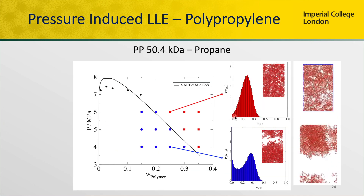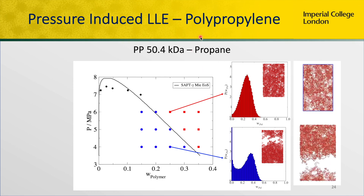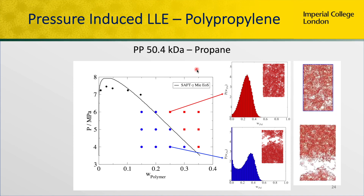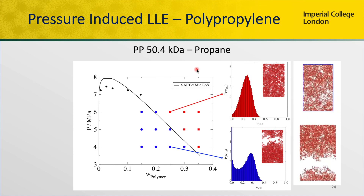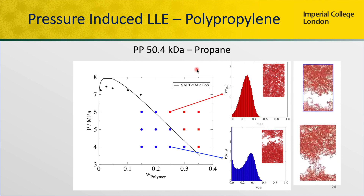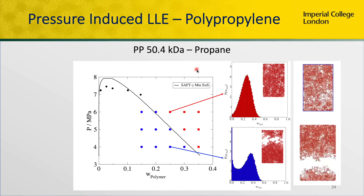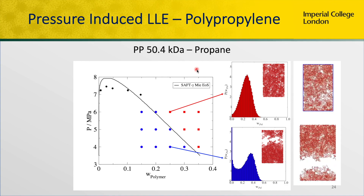Finally, we could even go into very high molecular weight polypropylene and propane, and we could see that we get miscibility — pressure-induced miscibility — which is in quantitative agreement between the experimental results, molecular simulations, and the equation of states.